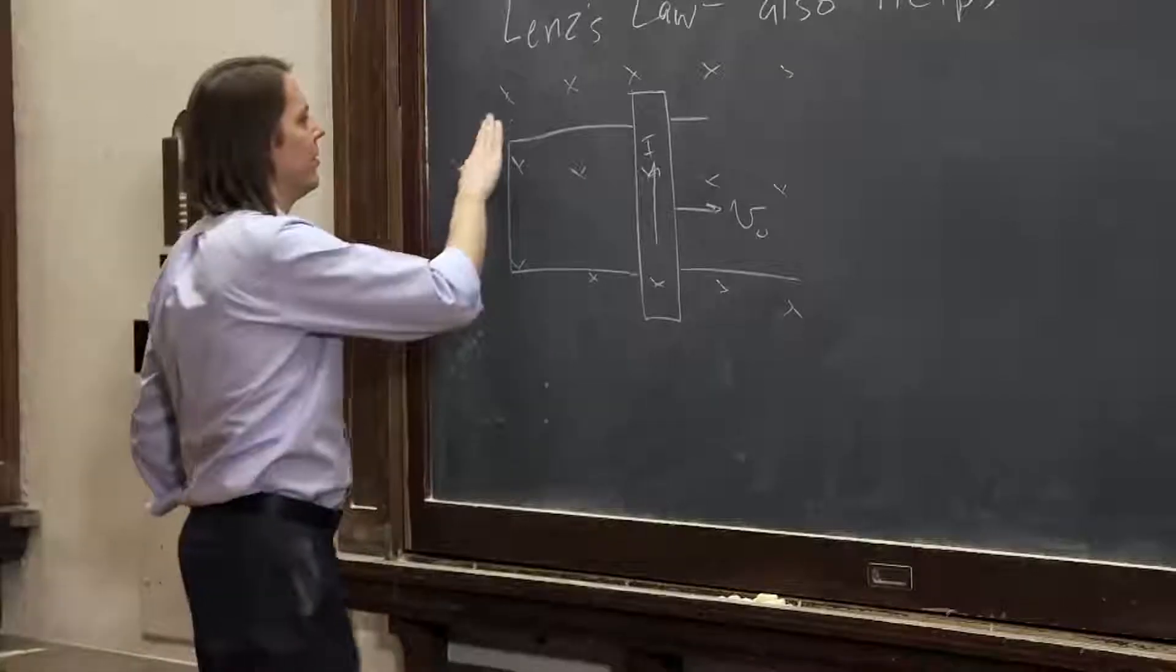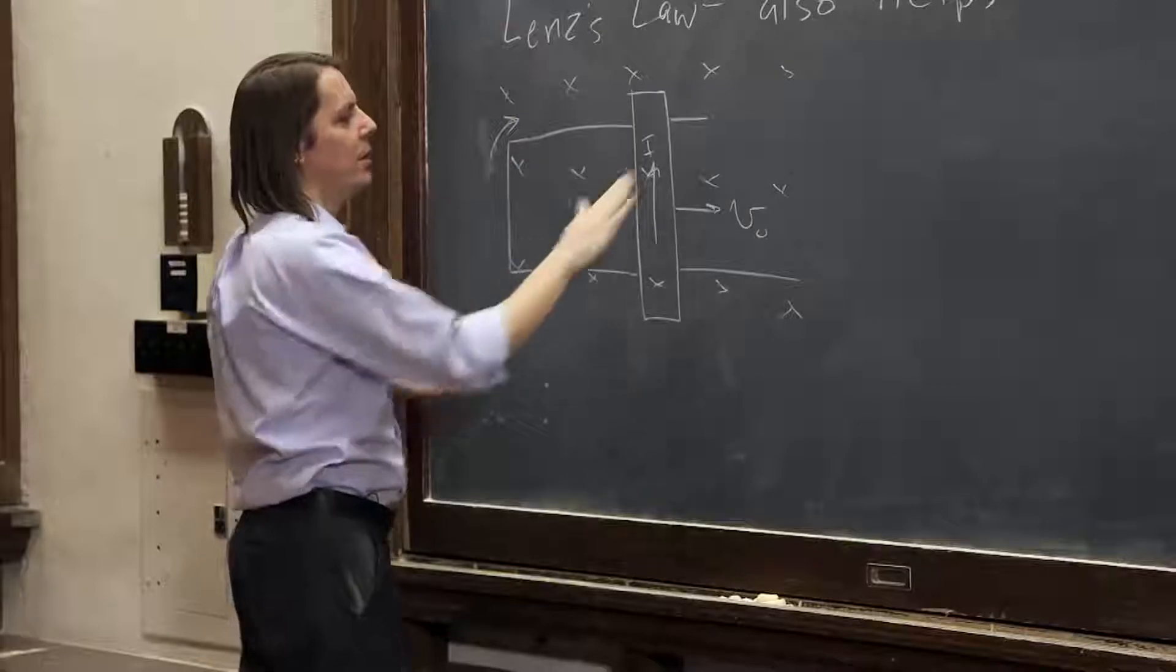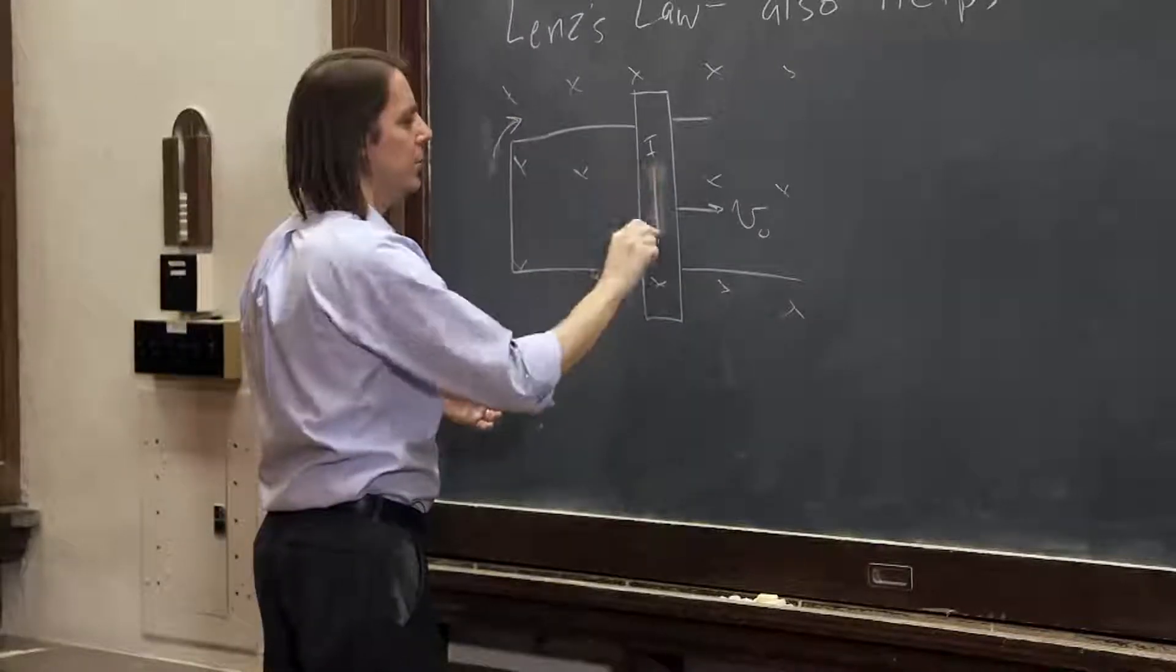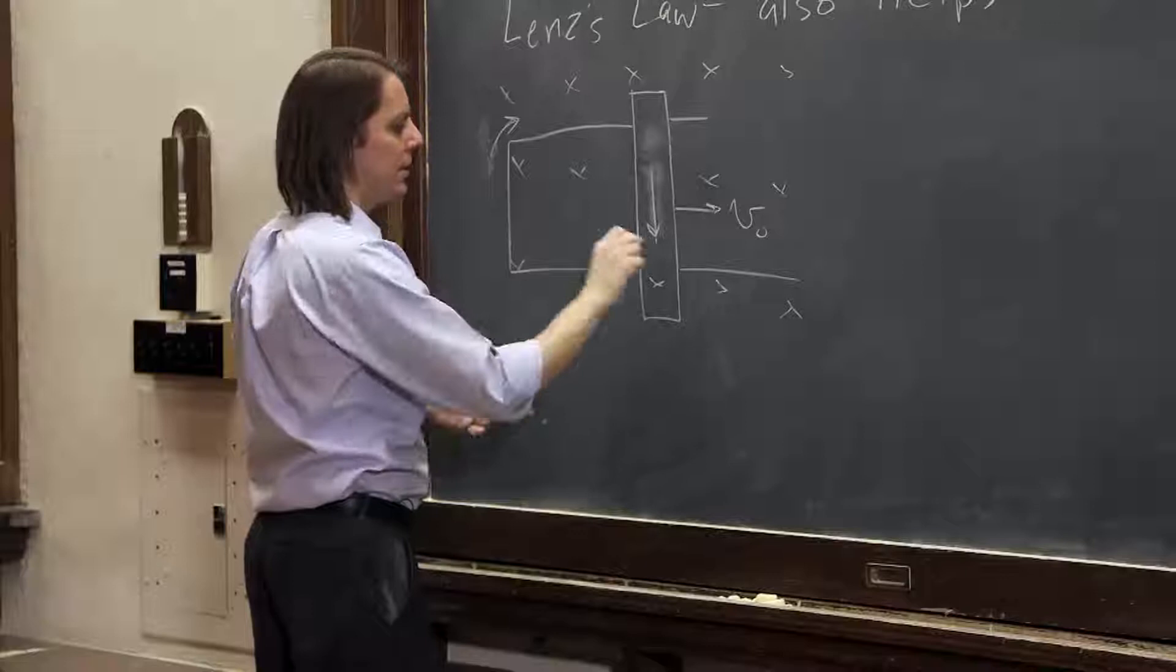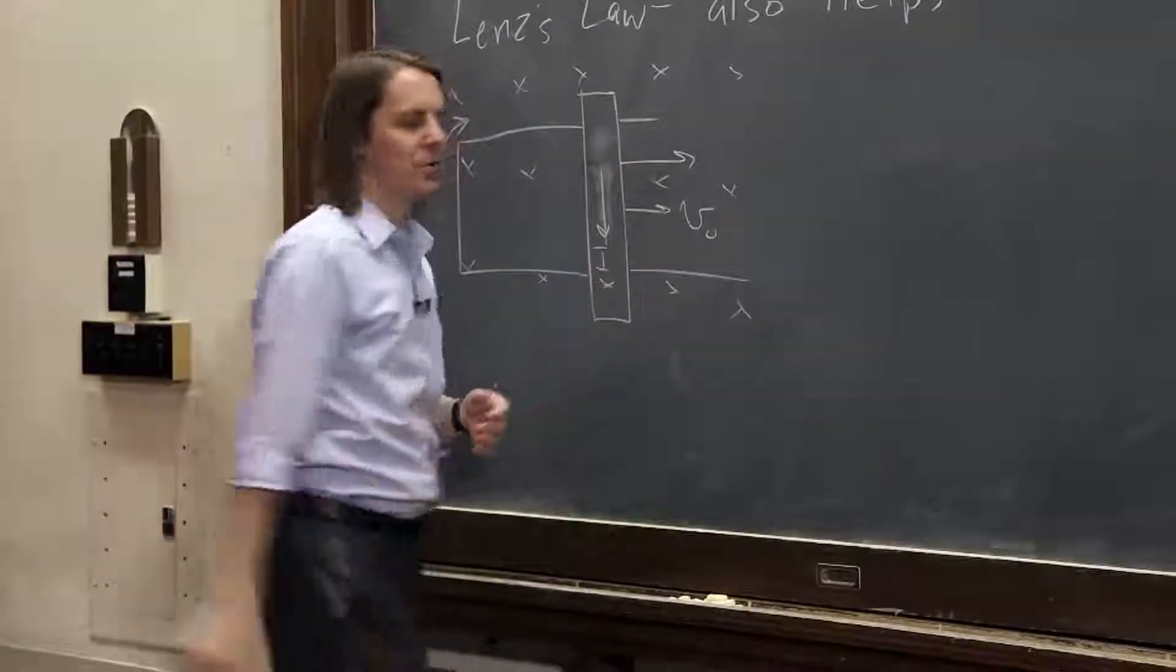What if it could go either way? Well, then the current went that way. And this current would go this way like that. And then V cross B - when you pushed it forward, you would get a force pushing it forward more.